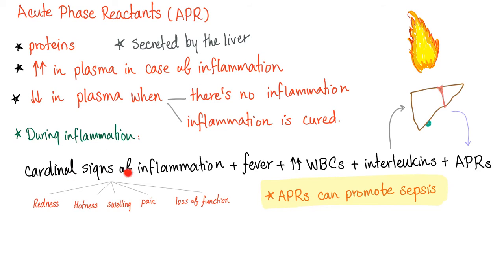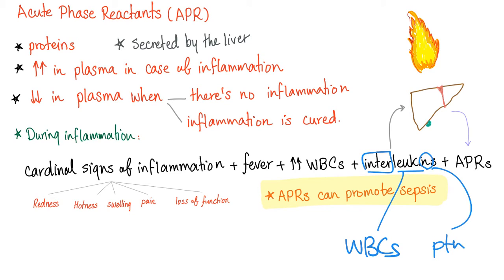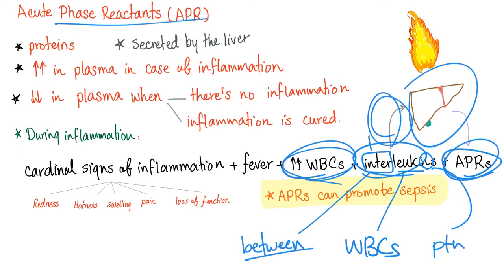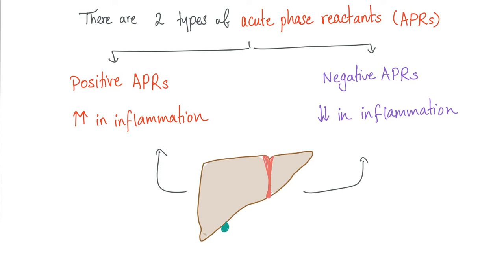During inflammation you have cardinal signs, fever, leukocytosis, and interleukins. Interleukins are the communication network of white blood cells — when there are many white blood cells, there will be many interleukins. The liver senses the increased interleukins and secretes acute phase reactants. There are two types: positive APRs, which increase in inflammation, and negative APRs, whose plasma level decreases.